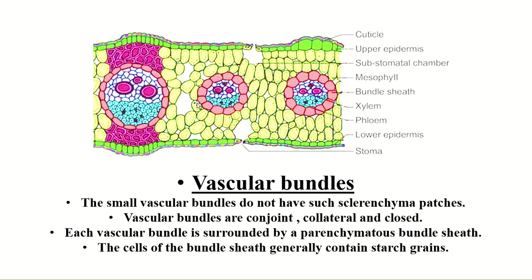The vascular bundle is surrounded by parenchymatous bundle sheath cells. The cells of the bundle sheath generally contain starch — so these pink-colored cells are the parenchymatous bundle sheath cells, which store starch grains.